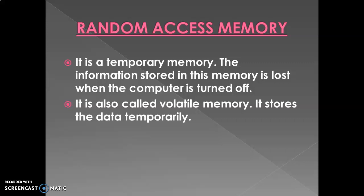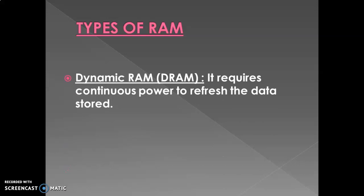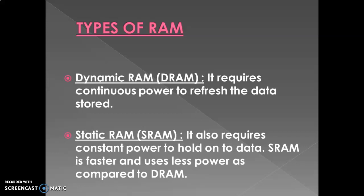Random access memory is also called the volatile memory, and it stores data temporarily. There are two types of RAM: dynamic RAM, that is DRAM, and static RAM, that is SRAM. Dynamic RAM requires continuous power — your computer should be plugged into electricity so that you can refresh the data already stored. Static RAM also requires constant power, but SRAM is faster and uses less power compared to DRAM.